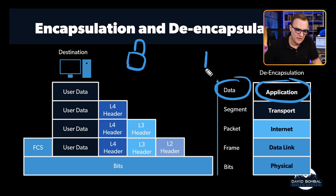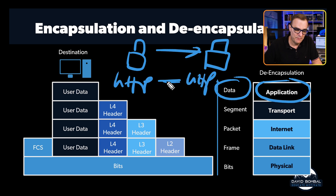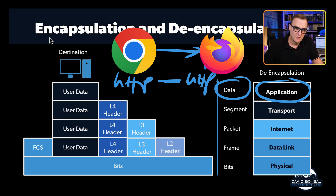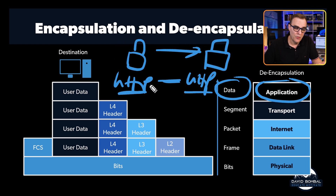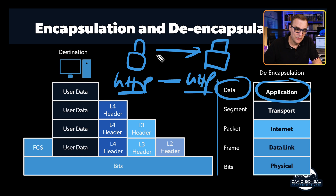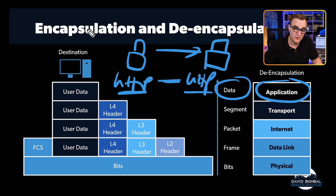We have a PC sending data to another PC, and the application used here is HTTP — HTTP communicating to HTTP. In the real world, we use an application like Chrome, but remember there's a difference between the application and the application protocol. Chrome or Firefox uses HTTP, HTTPS, or TLS to communicate. The sending and receiving devices both have to use the same application protocol. You couldn't use HTTP to communicate with an application that doesn't support HTTP — like Telnet, which is a different protocol. They have to agree on the same language.